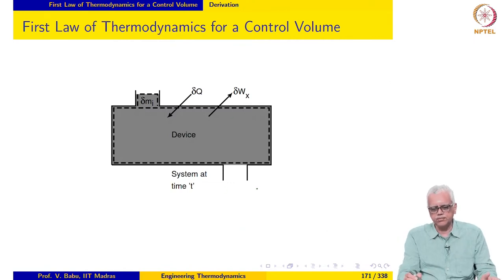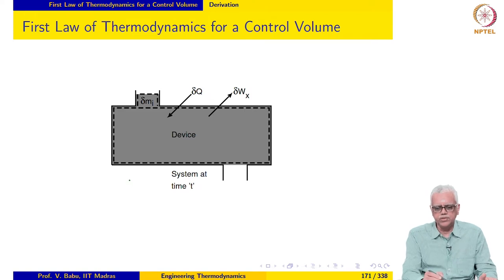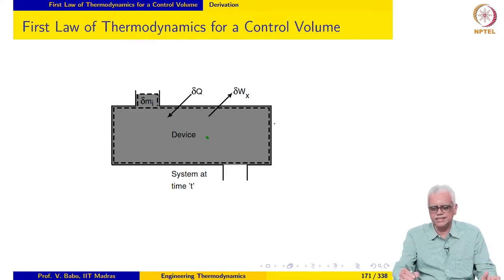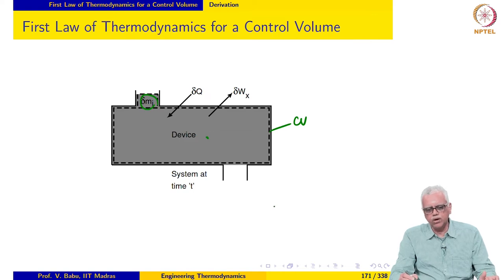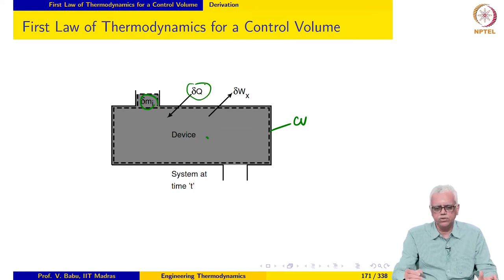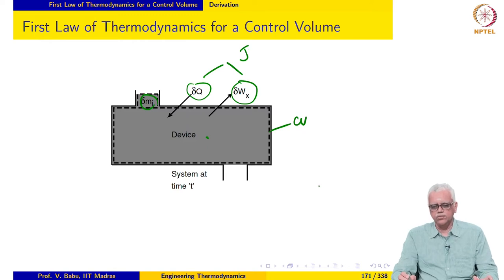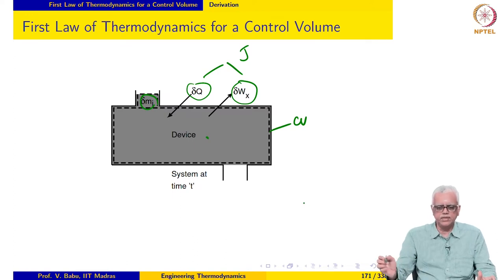This is a system appropriate for this analysis. At time instant t, we have a certain amount of mass in the device or control volume, and a certain amount of mass δmᵢ is just about to enter the device. An amount of heat δq and an amount of work δwₓ — both in units of joules — are exchanged between the system and the surroundings.